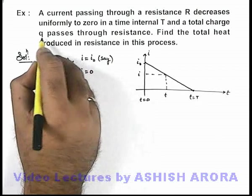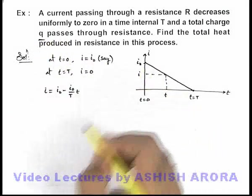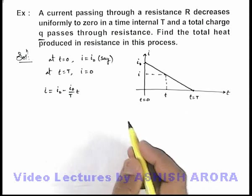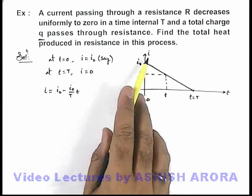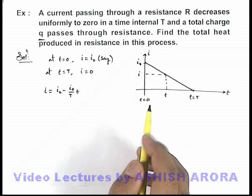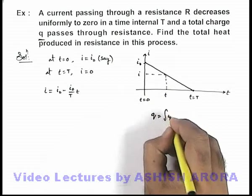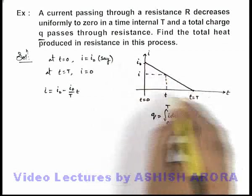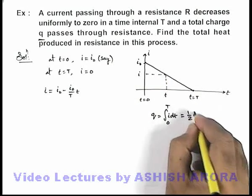We are also given that the total amount of charge which passes through the resistance in this duration is q. So we know that the area under the current-time curve is the total charge. Then the total charge can be written as integration of i dt from zero to T, and this area we can write as half i_0 T.